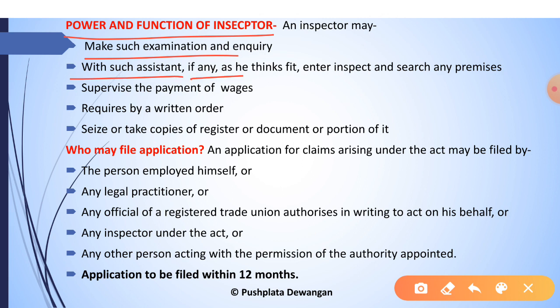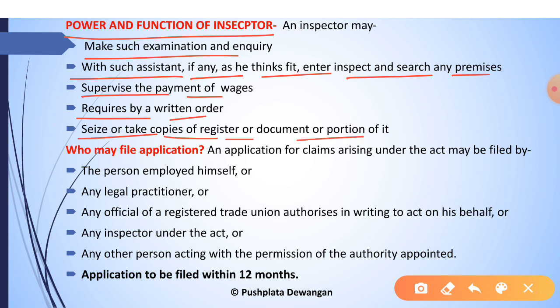An inspector may make such examination or inquiry as he thinks fit to ascertain if the provisions of this Act or rules made thereunder are being observed. With such assistance as he thinks fit, an inspector may enter, inspect, and search any premises of any railway, factory, or industrial or other establishment at a reasonable time. An inspector may also supervise payment of wages, require production of registers or records maintained under this Act, and seize or take copies of registers or documents relevant to offenses under this Act.